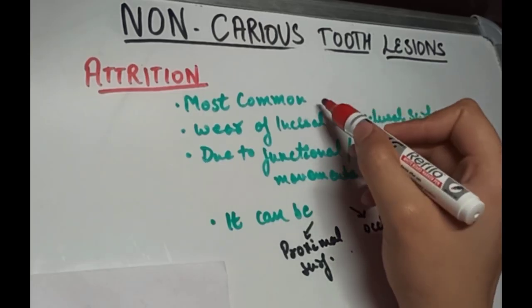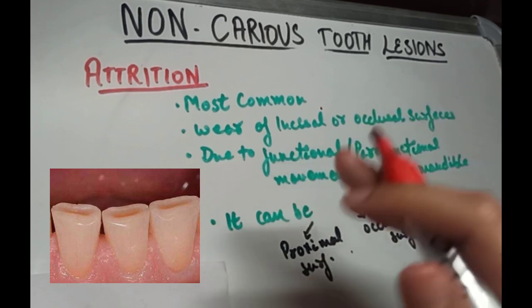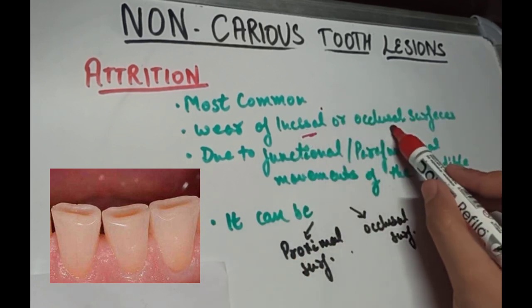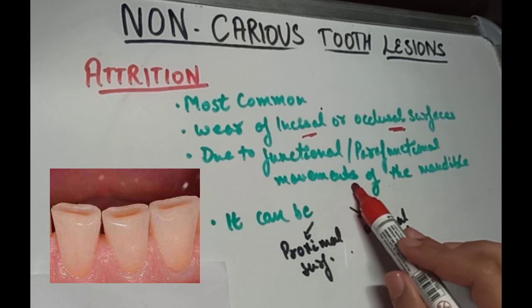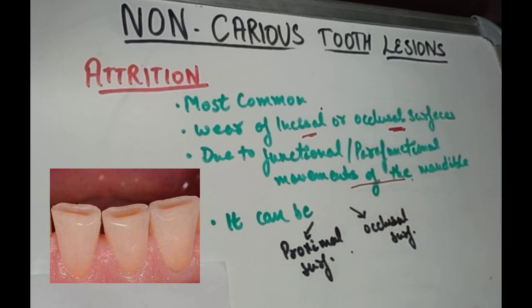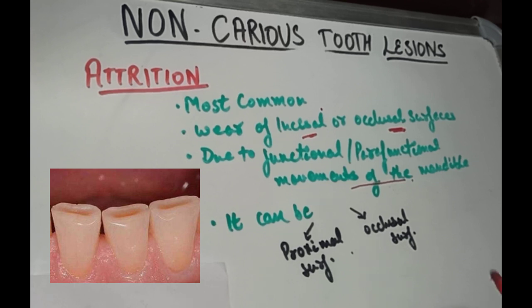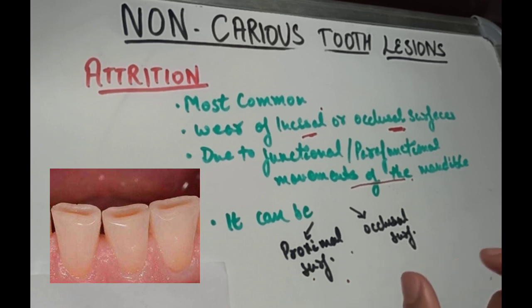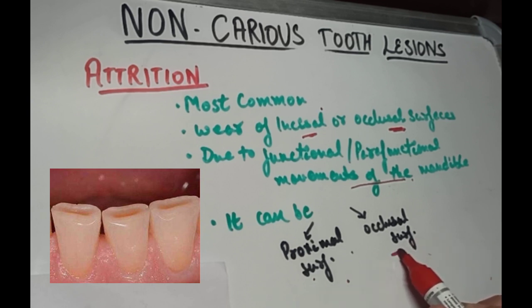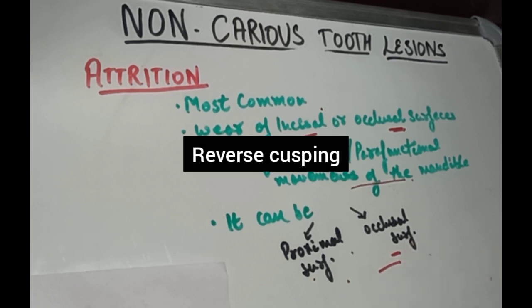Attrition is the most common way of tooth wear. It is the mechanical wear of the incisal or occlusal surfaces of the teeth and occurs as a result of functional or parafunctional movements of the mandible — that is, tooth-to-tooth contact as in mastication. It can be on the proximal surface or the occlusal surface. On the proximal surface it leads to widened proximal contact areas, decreased mesiodistal width of the teeth, and decreased interproximal space. On the occlusal surface it leads to loss or flattening of the occlusal surface, facet formations, or reverse cusping of the occluding elements.